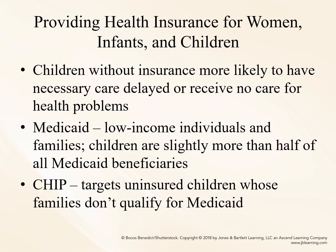The government has two principal programs aimed at providing health care coverage to low-income children: the Medicaid program and the State Children's Health Insurance Program, called CHIP. Medicaid was created in 1965 and provides medical assistance to certain low-income individuals and families, primarily women and children. It is the single largest provider of health insurance for children in the United States, covering over 33 million children. However, being poor does not automatically qualify a child for Medicaid — eligibility is determined by each state based on various age and income requirements, leaving a significant number of poor children uninsured. To broaden coverage, Congress created CHIP under the Balanced Budget Act of 1997.